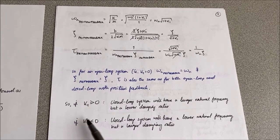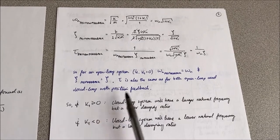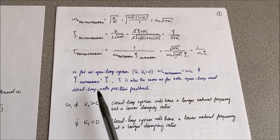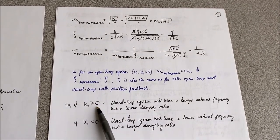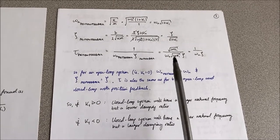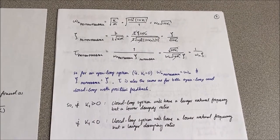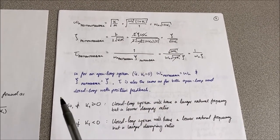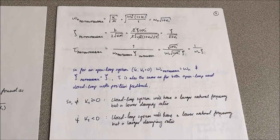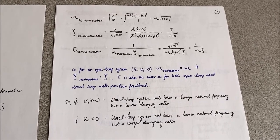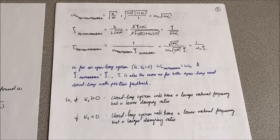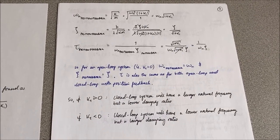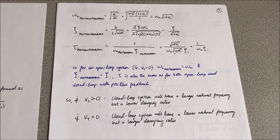What happens if we vary the gain? We can either have k1 greater than zero or k1 less than zero. If k1 is greater than zero, then the closed-loop system would have a larger natural frequency than the open-loop case, but a lower damping ratio, because the term appears on the denominator — and vice versa if k1 is less than zero. That might be good or bad depending on whether we would like our control input to be heavily damped and avoiding overshoot, for example, and that kind of consideration must be made when choosing the value of the gain.